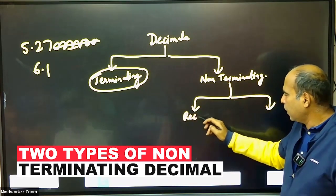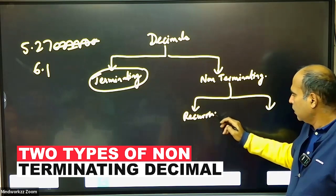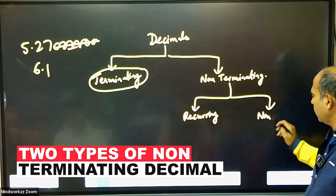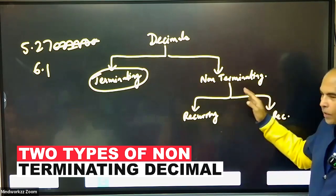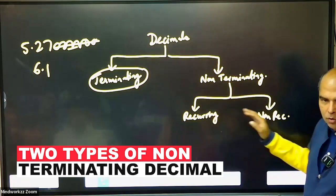Repeating, non-repeating, recurring, non-recurring. There are two kinds of non-terminating decimals: recurring decimals and non-recurring decimals.